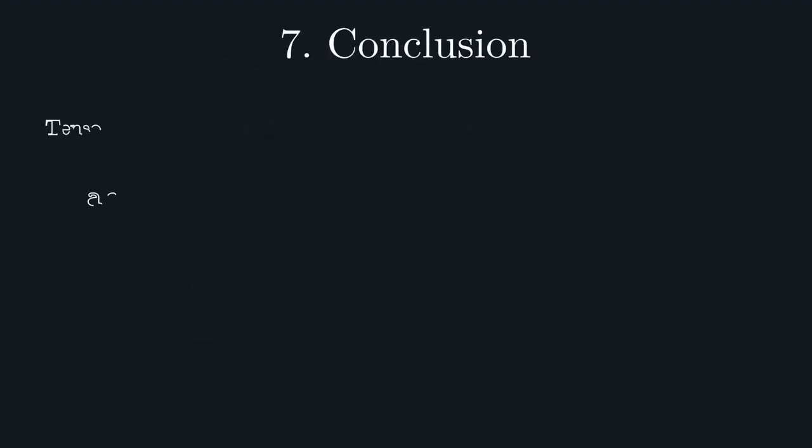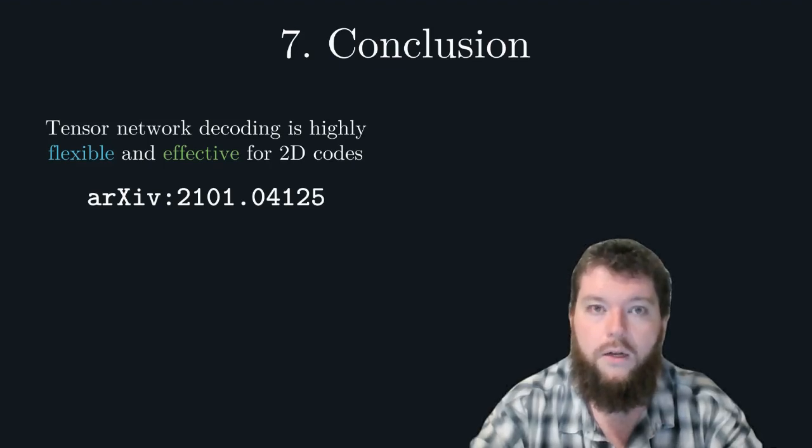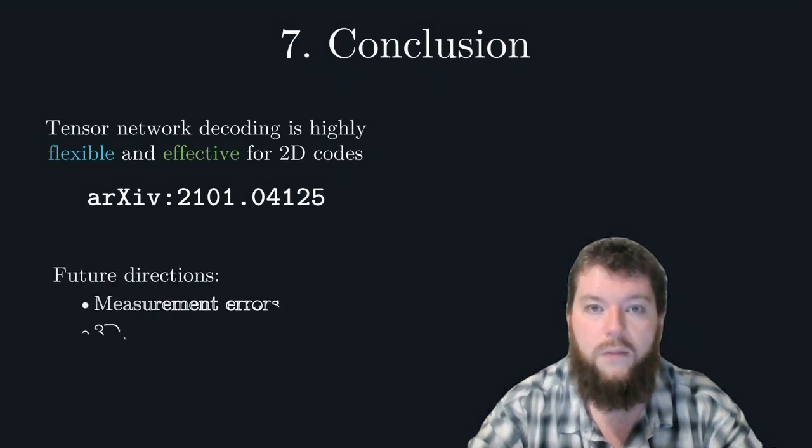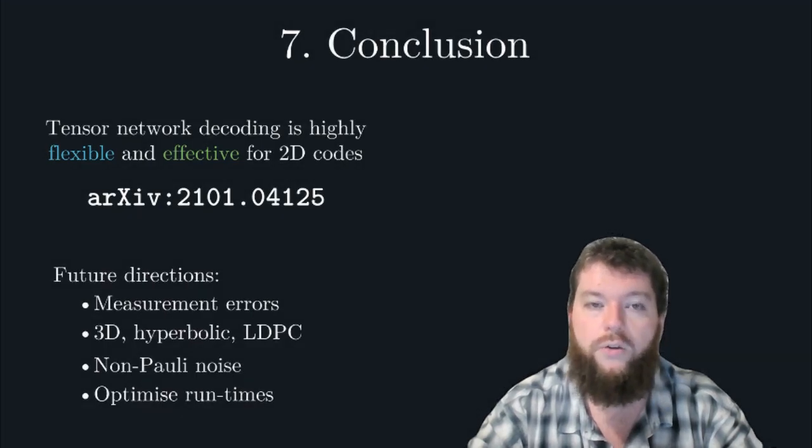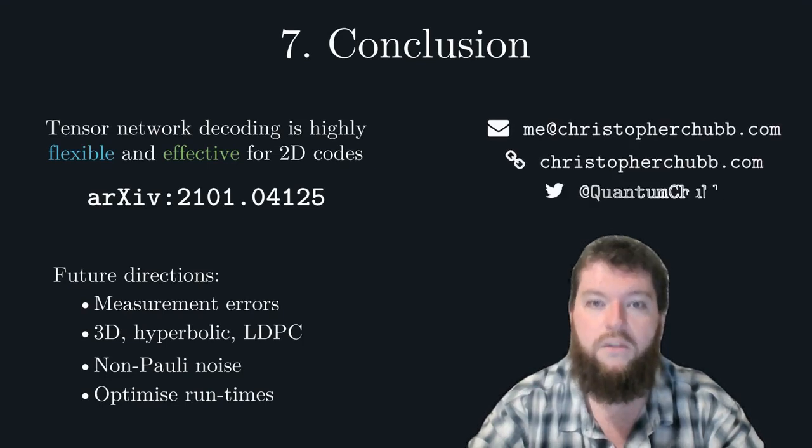And now we've come to the conclusion. In this talk, I've introduced a scheme for tensor network decoding of any 2D Pauli code, and numerically demonstrated this scheme to be both highly flexible and highly effective. Several extensions of this work suggest themselves in making this decoder more widely applicable. The two most obvious are including noisy measurements or going to codes beyond 2D, both of which I'm currently working on. There are also several other potential directions, such as more general noise models, or optimizing the runtimes. Paper is available on the archive. Here are my relevant links if you want to get in contact with me. Thanks for listening.